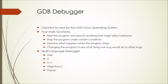The first debugger I'd like to talk about is the GDB debugger, which was created by the GNU Linux operating system team for the GNU Linux operating system. Like most debuggers, GDB has four main functions: being able to start the program and specify anything that might affect behavior, stop the program under certain conditions, examine what happens when the program stops, and change the program to see what fixing one bug would do to another. GDB is a multi-language debugger, meaning it supports more than one language. The most popular languages it supports are Ada, C, C++, Objective-C, and Pascal.